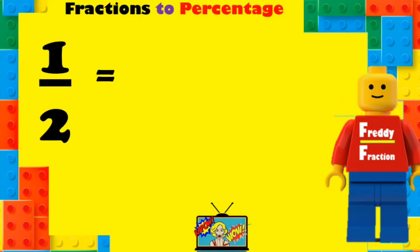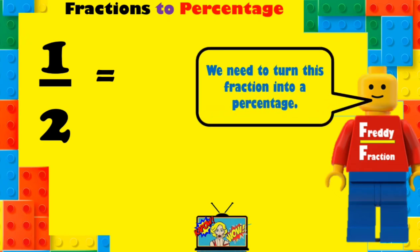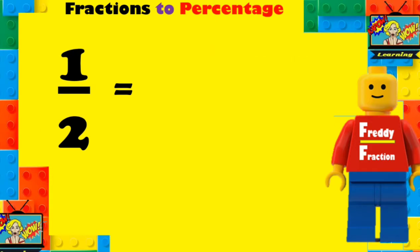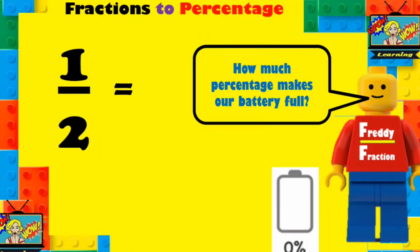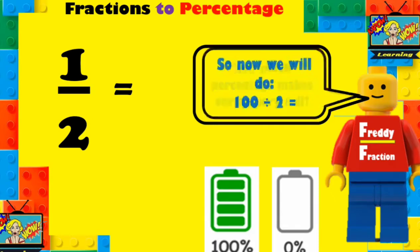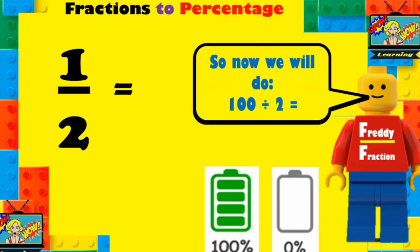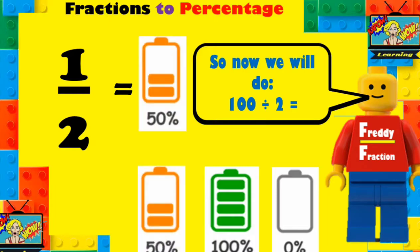Here we have one half. We need to turn this fraction into a percentage. How can we turn this fraction into a percentage? Can you remember? How much percentage makes our battery full on our phone? It's 100 percent! So what we will do is 100 divided by the denominator, which is 2. And that is 50 — 50 percent! So one half is equal to 50 percent! That's totally awesome!